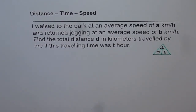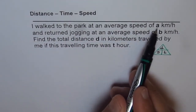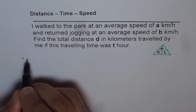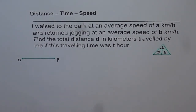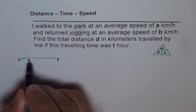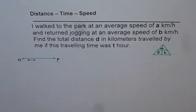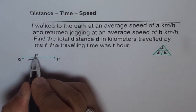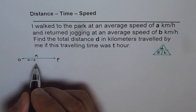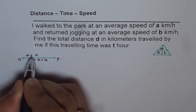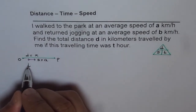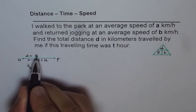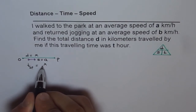Let me give you a sketch. I walk to the park at an average speed of A km per hour. We start from the origin O and walk to the park P. The speed is A km per hour and let us say the distance from O to P is X. Since time equals distance divided by speed, the time taken going from O to P is X divided by A.